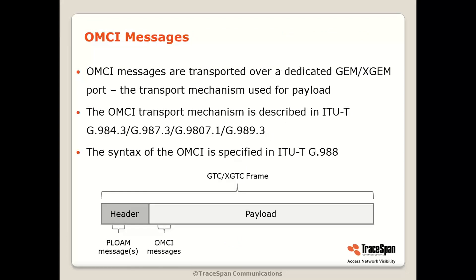OMCI messages are transported over a dedicated GEM or XGEM port. This is the same transport mechanism which is used for payload. The transport mechanism is described in the relevant standard depending on the type of PON technology — so for GPON it would be G984.3, XGPON1 G987.3, and so on. The syntax of OMCI is specified in the dedicated OMCI standard G988. The messages are transferred in the payload channel, unlike the PLOAM messages which are transferred in the header. So OMCI is transferred in the same manner as user data.